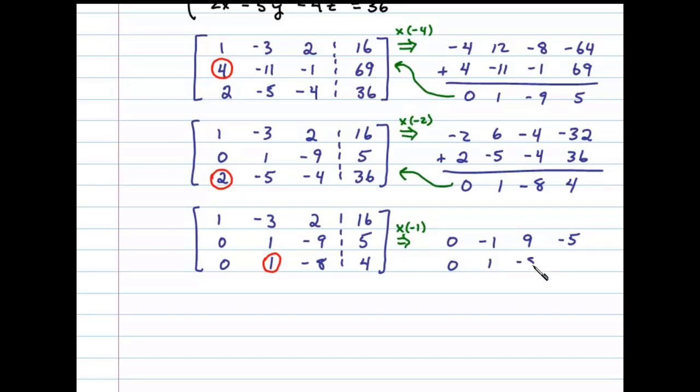That leaves us with 0, 0, 1, and negative 1. Now we'll use this to replace the third row again.